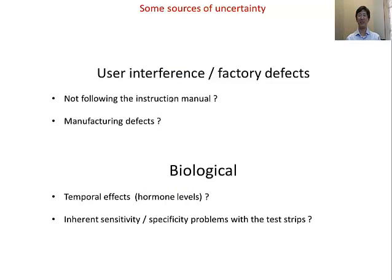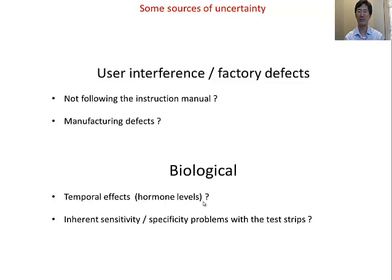Some sources of uncertainty we see from these exercises: user or factory defects — the user meaning somebody didn't pee on the strip correctly, so it's not red; factory defects meaning the antibody was not present on the strip or got washed off. There are also biological effects — temporal effects where if you've been pregnant longer, your strip might get darker because hormone levels are more concentrated in urine. And there may be inherent problems with the test itself: maybe the antibodies used to construct the lateral flow strip are not very specific, so you'd need better antibodies. These are assay-related problems as opposed to true biological problems.